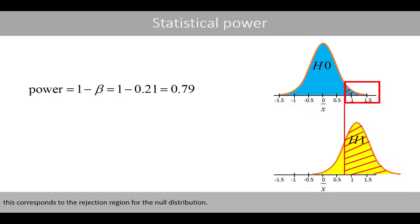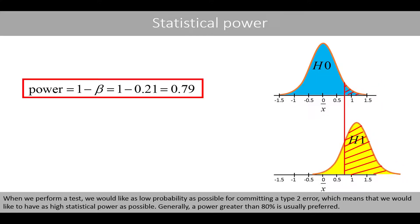Because this corresponds to the rejection region for the null distribution, when we perform a test, we would like as low a probability as possible for committing a type 2 error, which means that we would like to have as high a statistical power as possible. Generally, a power greater than 80% is usually preferred.